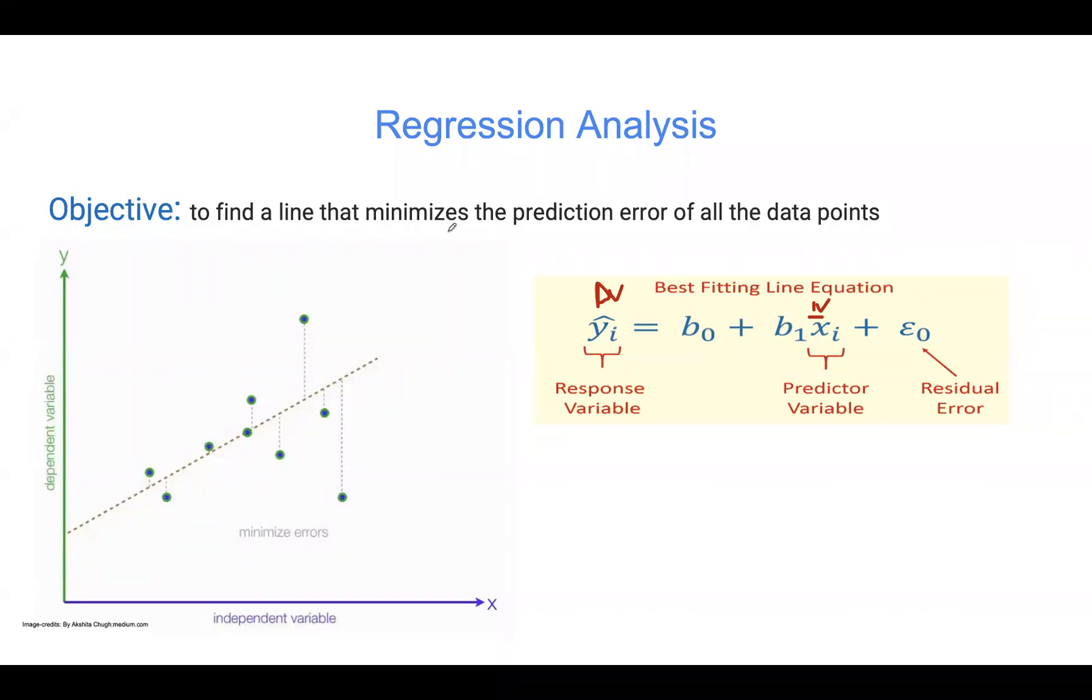The aim here is to find a line that minimizes the prediction error of all the data points. Given this equation, we want to use a regression line to predict the values of Y for values of X. In other words, we want to quantify a linear relationship between explanatory variable, which is X, and a response variable, which is Y. If we look at this plot here, on the Y-axis we have dependent variable, and on the X-axis we have the independent variable. The goal here is to try and find the best line that fits our data. The smaller the differences, the better our model.